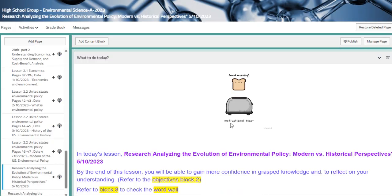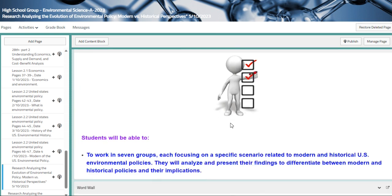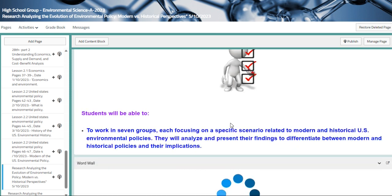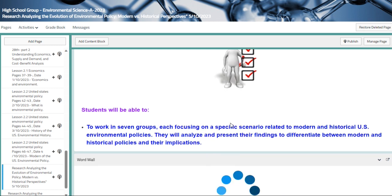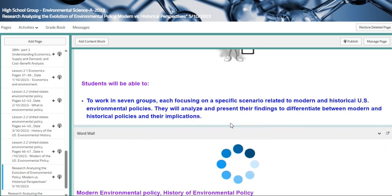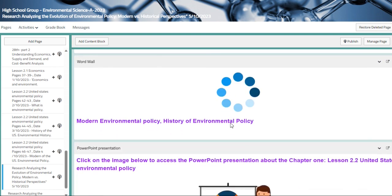So here we are going to do research and analyzing the evolution of environmental policy, modern versus historical perspective. So your objective is to work in seven groups, each focusing on specific scenarios related to modern and historical U.S. environmental policies. You will analyze and present your findings to differentiate between modern and historical policies.